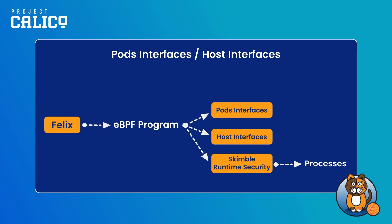This looks at all the processes running or soon to be running in your cluster to figure out which one is trying to do something malicious or out of context, and flags it to you. In Calico, when you choose eBPF, everything will be translated to eBPF programs.